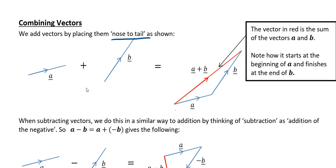You could have done it the other way around: you could have done your b first and then gone along your a and it would give you exactly the same thing. Vector a plus vector b is a single vector which replaces a and b.